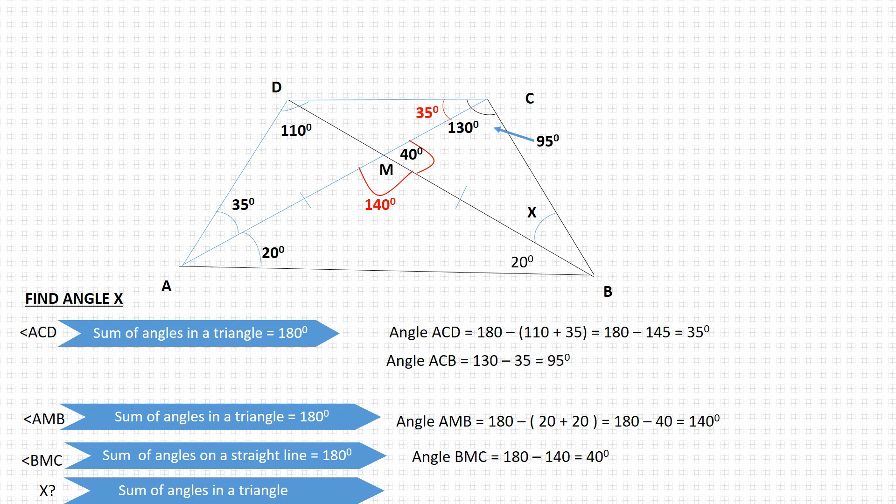Again, we use the property that the sum of angles in a triangle is 180 degrees. So we're going to do 180 degrees take away 95 plus 40, and so that gives us 180 degrees take away 135 degrees, which equals 45 degrees. And so we have our final answer.